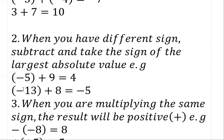Another example: minus thirteen plus eight. They are having different signs — this one is minus, this one is plus. Since they are having different signs, we subtract: thirteen minus eight gives us five. Then take the sign of the largest value. The largest value is thirteen, so we take its sign, which is minus, giving us minus five.